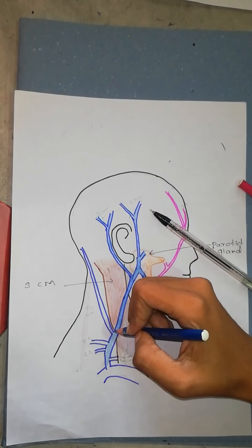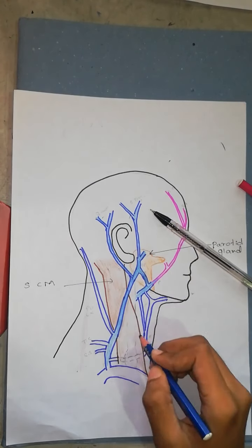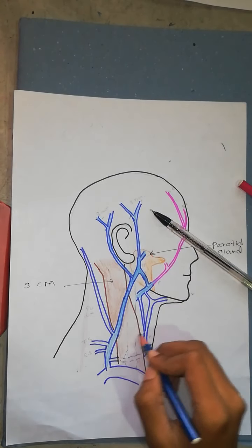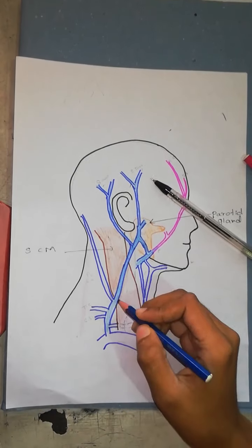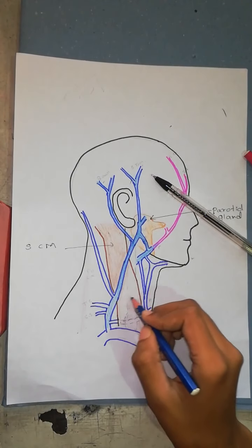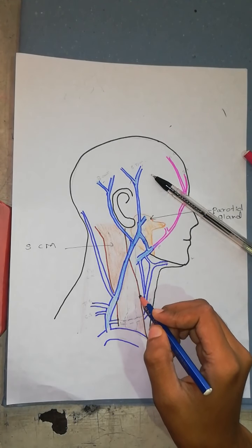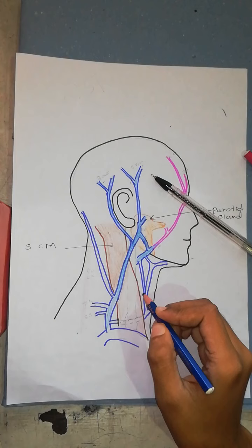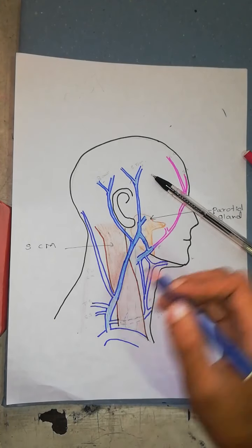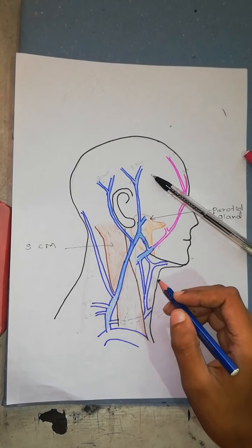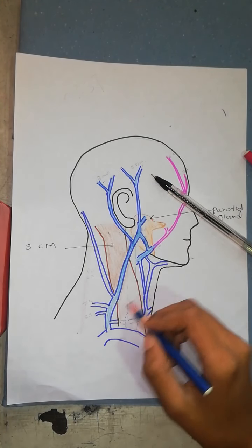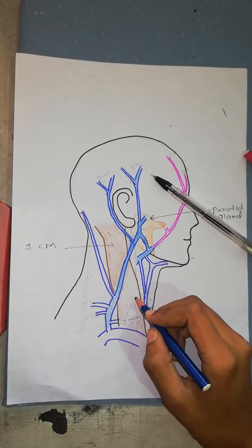Here, it crosses the roots of the brachial plexus. There is the brachial plexus and the third part of the subclavian artery. It also crosses the third part of the subclavian artery.